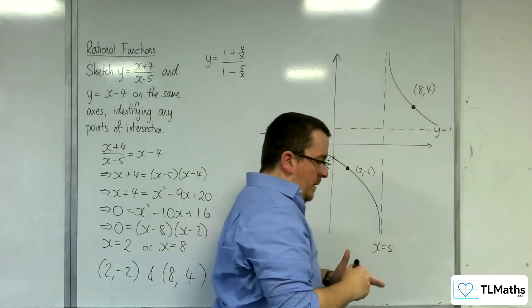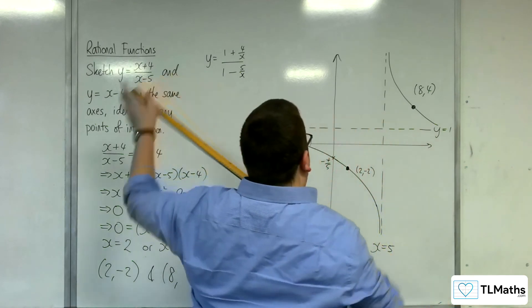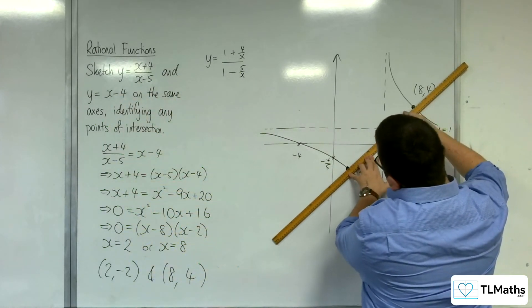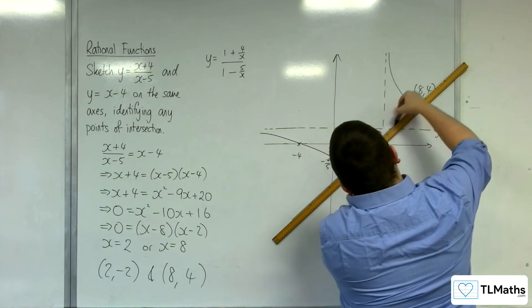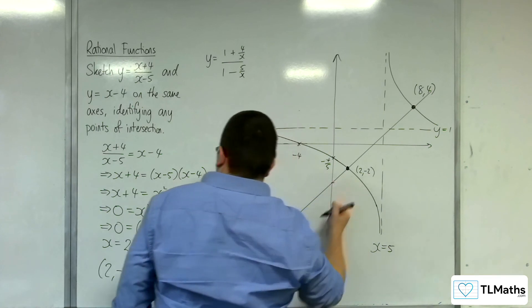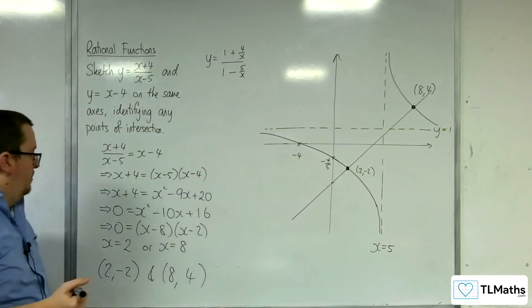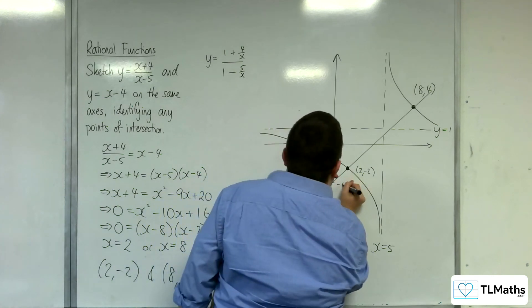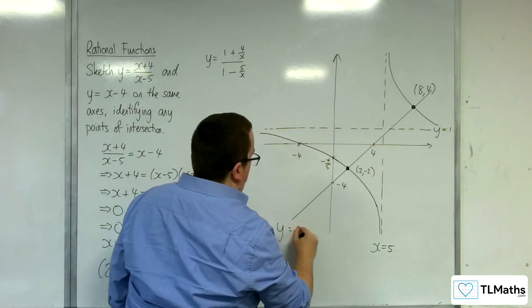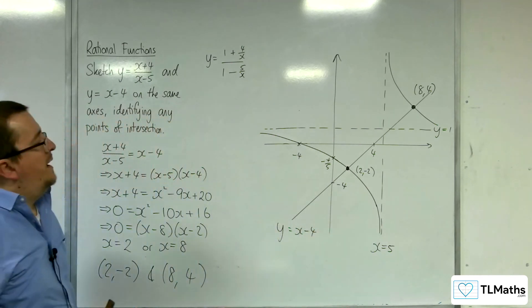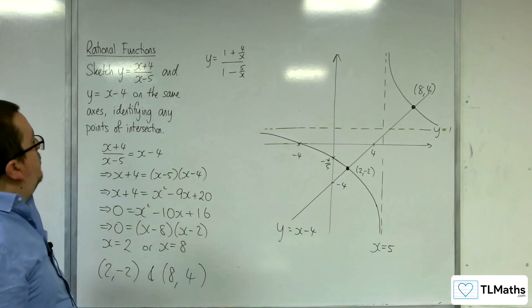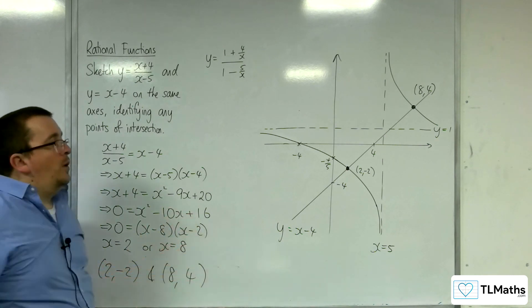So then I'm going to draw my line going through those two points. Like so. And so this point would be minus 4. And that point would be 4. So that's y equals x minus 4. And so that is my sketch of y equals x plus 4 over x minus 5 and y equals x minus 4 and the two points of intersection.